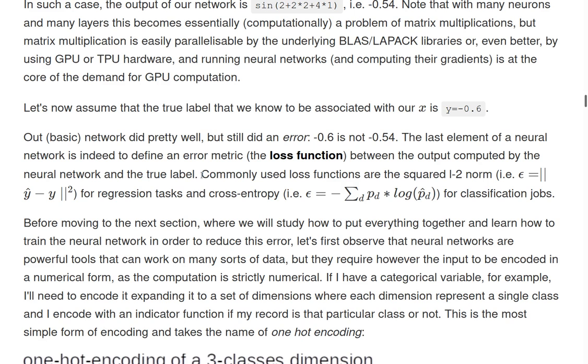And the last element to define a neural network is which kind of error metric we choose, which is called the loss function, to define the error between the predicted and the true value. So here, again, we don't have much to choose, luckily I would say, because most often for regression jobs is used the squared L2 norm, that is the squared Euclidean distance. And for classification problems, we use cross entropy. So we'll use one of these two loss functions and this returns how much error between our prediction and the true value. So before we move to the next functions where we'll put all these together and learn how to train the neural network to reduce this error here, I want to make one observation first.